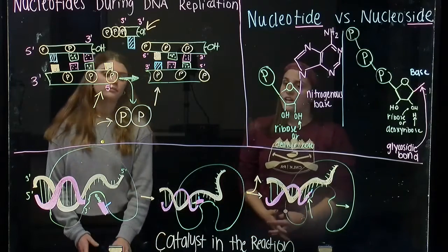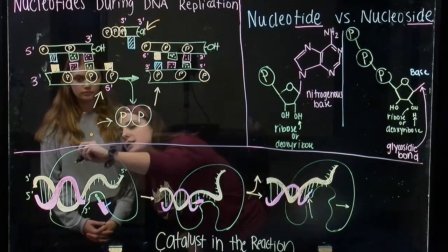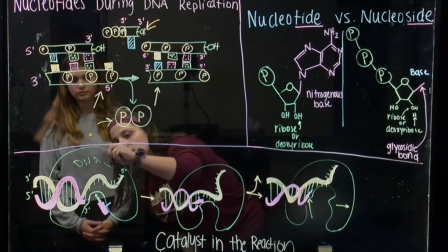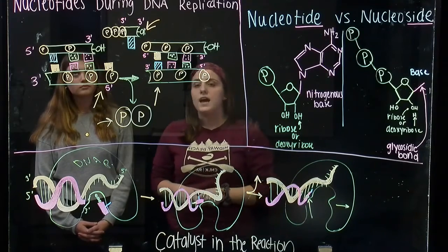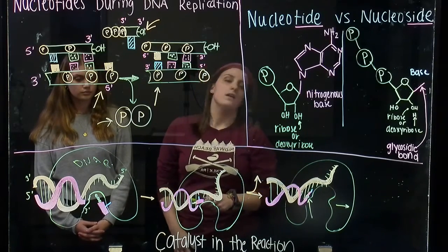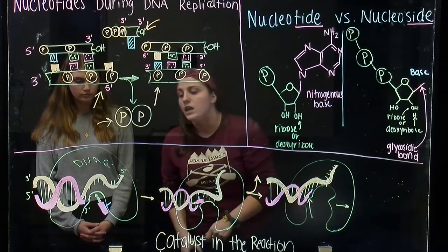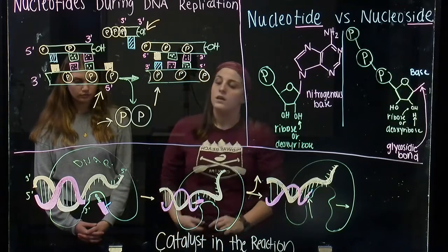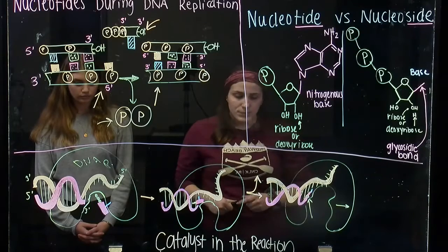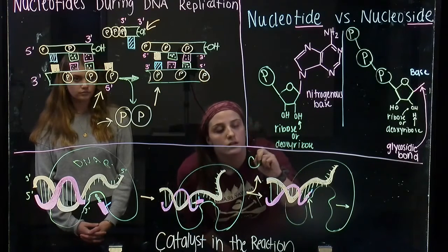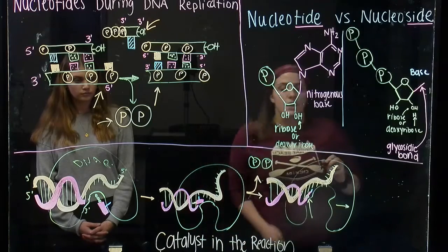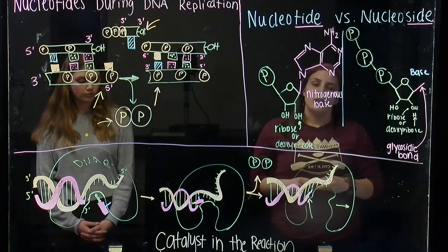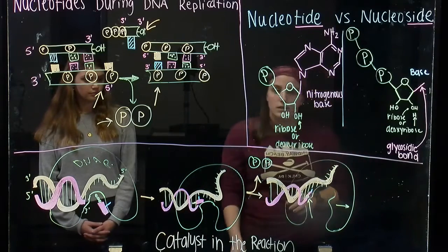In order for this reaction to happen, DNA polymerase is an enzyme that catalyzes the reaction. It helps guide the nucleoside triphosphate and the 5' triphosphate side to react with the 3' hydroxyl side. And as a result, an inorganic phosphate is released and the nucleoside triphosphate is now part of the strand.